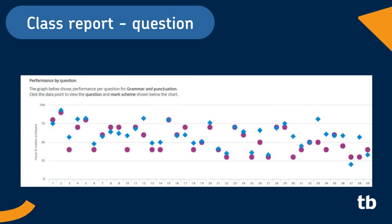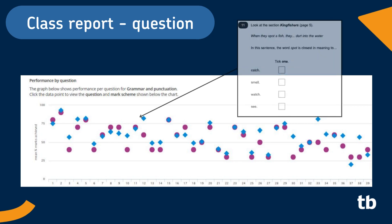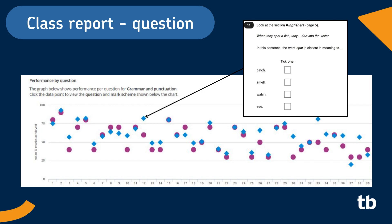The question level analysis chart shows the mean percentage marks achieved for each question on the test. You can click the data point to reveal the question and mark scheme for further analysis. You can then compare your pupils' performance with that of the population to help identify questions that your class found easier or harder to answer and help to inform planning and teaching for later in the term.